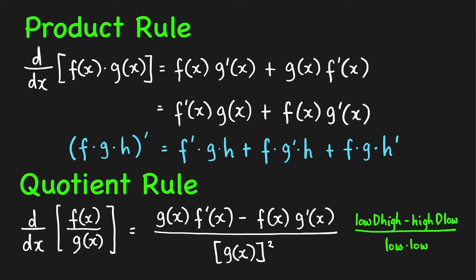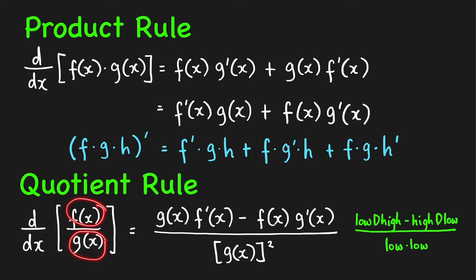Next we have this rule to find the derivative of a quotient. The derivative of f(x) over g(x) is equal to g(x) times the derivative of the numerator f′(x), minus the numerator times the derivative of the denominator, all over the square of the denominator. The way we memorize this formula is using a mnemonic.